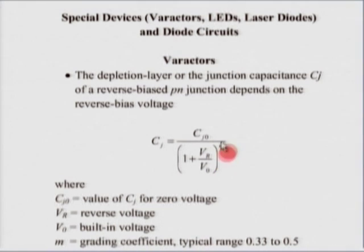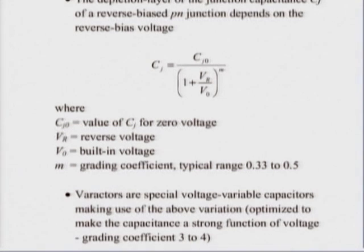When V_r is equal to zero, you would get the same value. This property of a p-n junction is extremely useful. There are special diodes by the name varactors, where this particular property is made use of. Varactors can be thought of as voltage variable capacitors, where they use this variation of capacitance as a function of the reverse voltage. The only difference is they are optimized for this particular purpose; therefore, the grading coefficient is made between 3 to 4, so that the capacitance variation is a strong function of the reverse voltage.